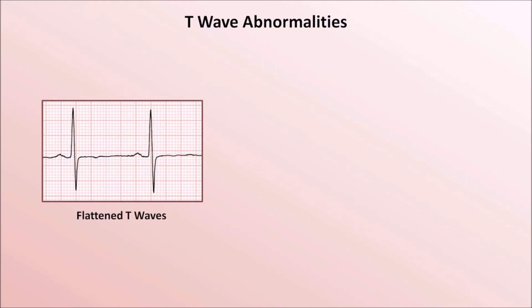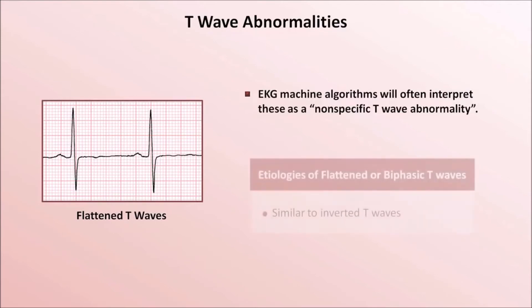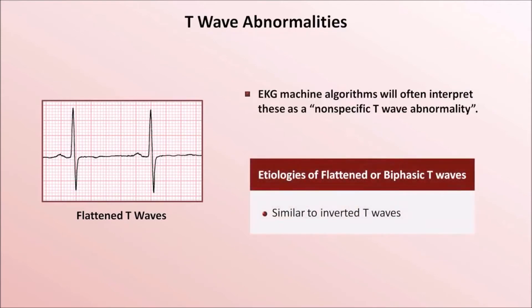Instead of being inverted, T waves may also be flattened, or even biphasic, with both positive and negative components. The EKG machine algorithm will often interpret these as a nonspecific T wave abnormality. The etiologies of flattened or biphasic T waves are similar to those of inverted T waves.